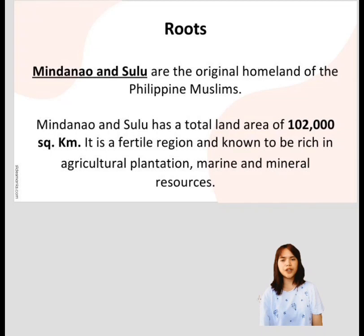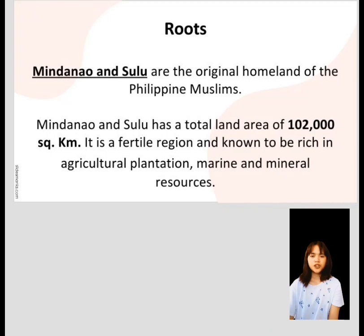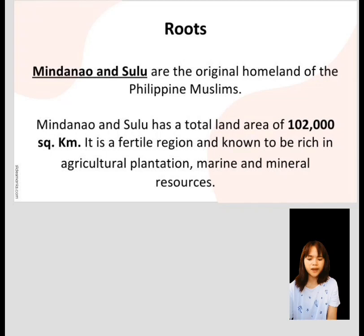Mindanao and Sulu are the original homeland of the Philippine Muslims, with a total land area of 102,000 square kilometers. It is a fertile region rich in agricultural plantations, marine, and mineral resources. More than half of the country's rainforests are found in Mindanao. Agricultural crops include corn, fruit crops, vegetables, rice, and cassava. Marine products like seaweed, fish, as well as gas and oil are dominant in the Sulu Sea.